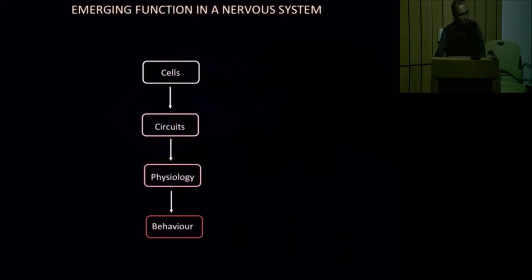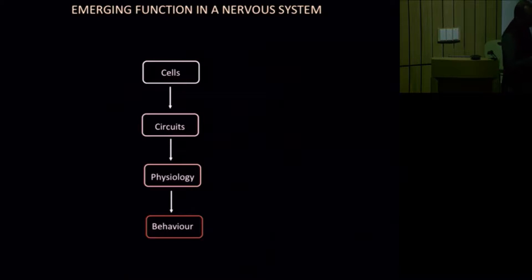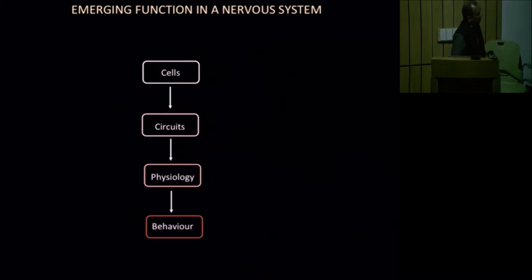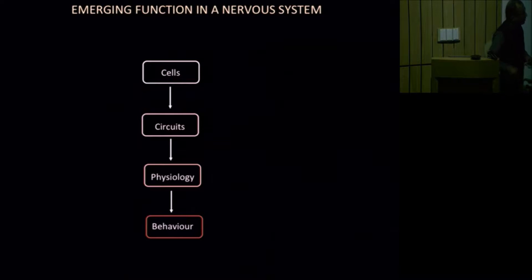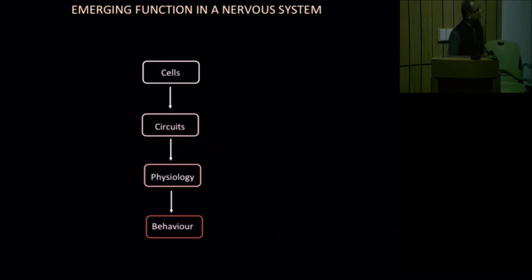Whenever you have a problem as complex as the brain, it is useful to break it down into manageable and analytical bits. One way of doing this is shown on this slide. One can think of normal human behavior as the final output of the brain, and that output is dependent upon the physiology or the functioning of the neurons that constitute it. These neurons themselves, along with the glial cells, are put together to form circuits that form critical and important connections.